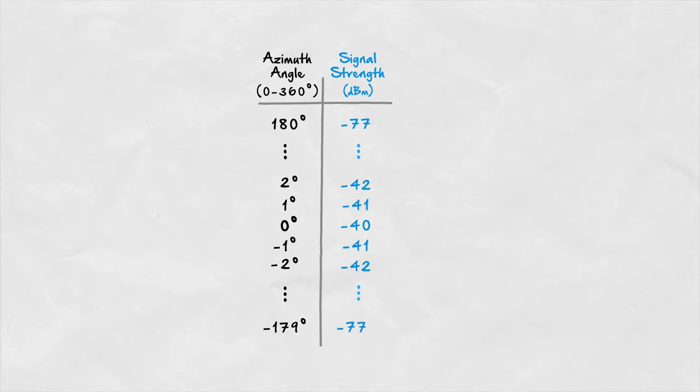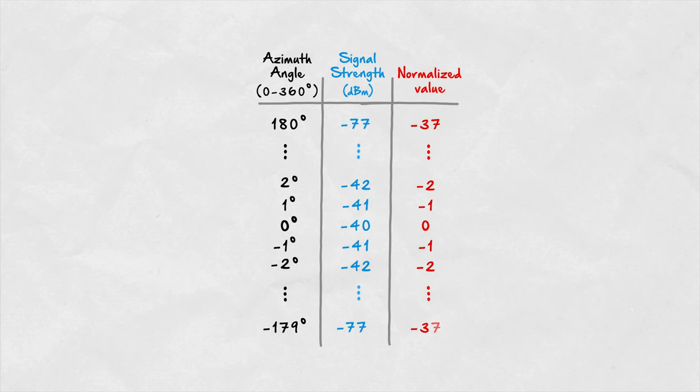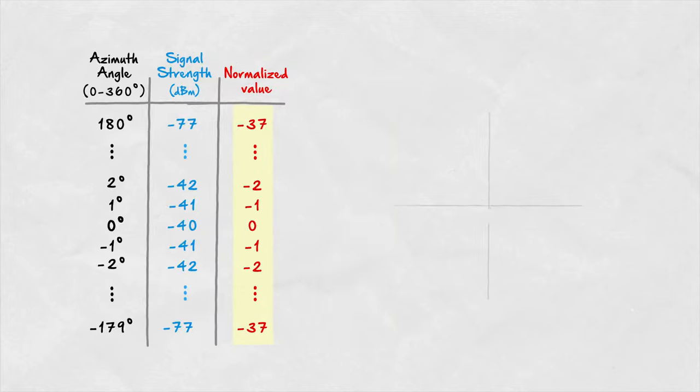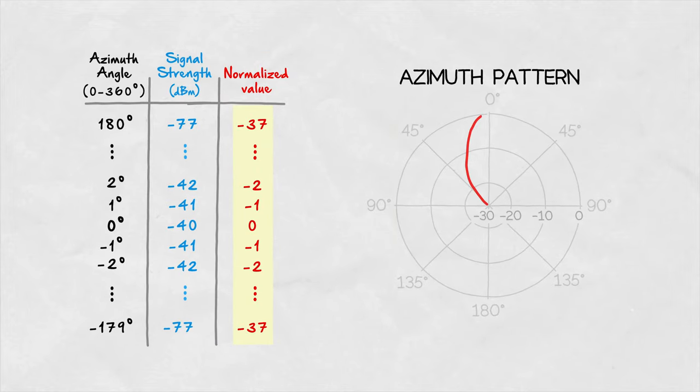The data is then processed so that the maximum value of all data points is zero to get a normalized radiation pattern. These points are then graphed on a polar plot to create the visual representation we're all familiar with.